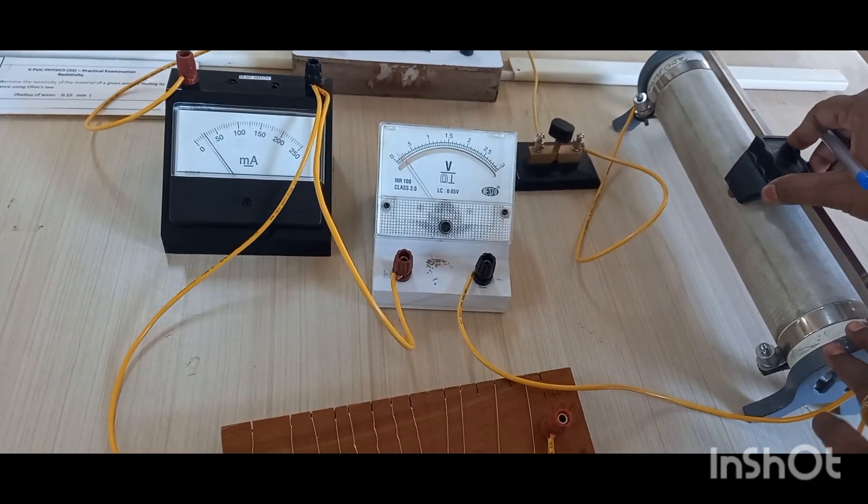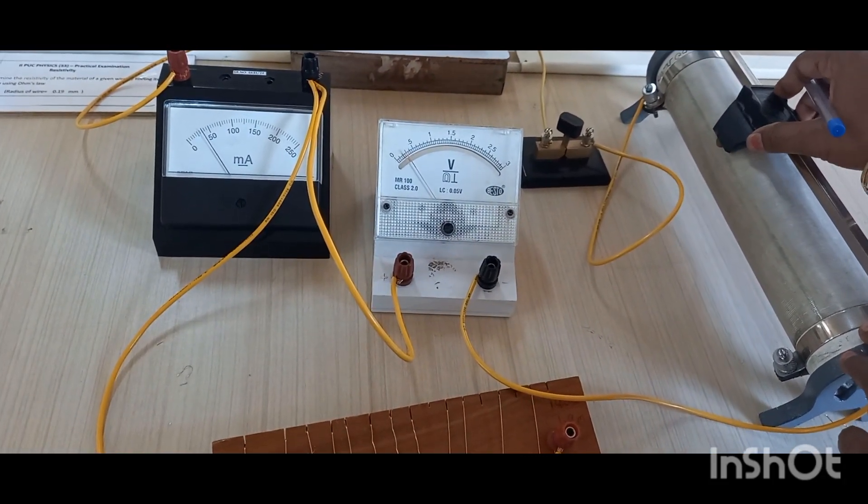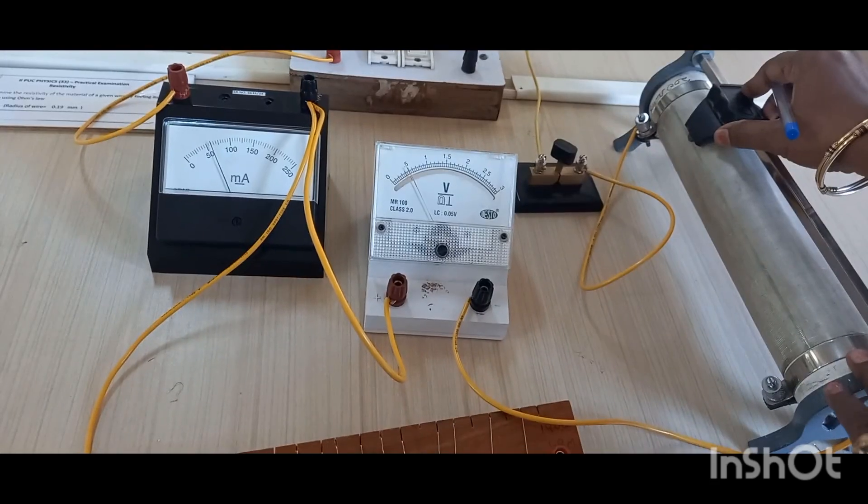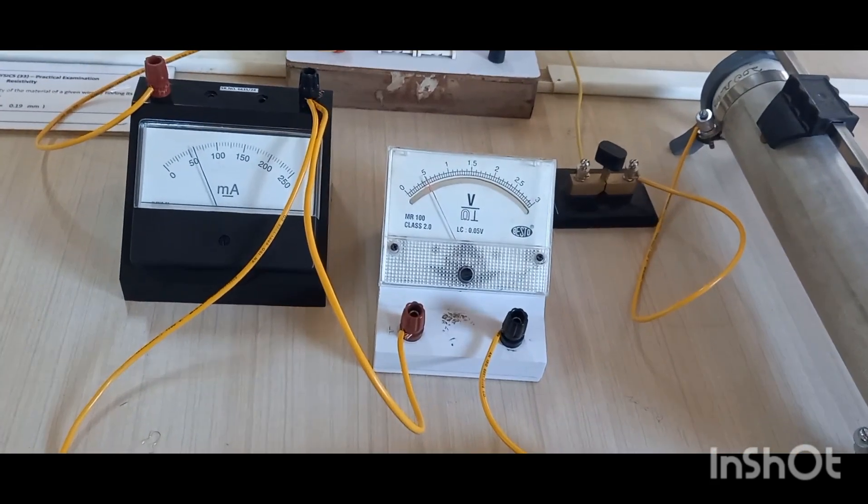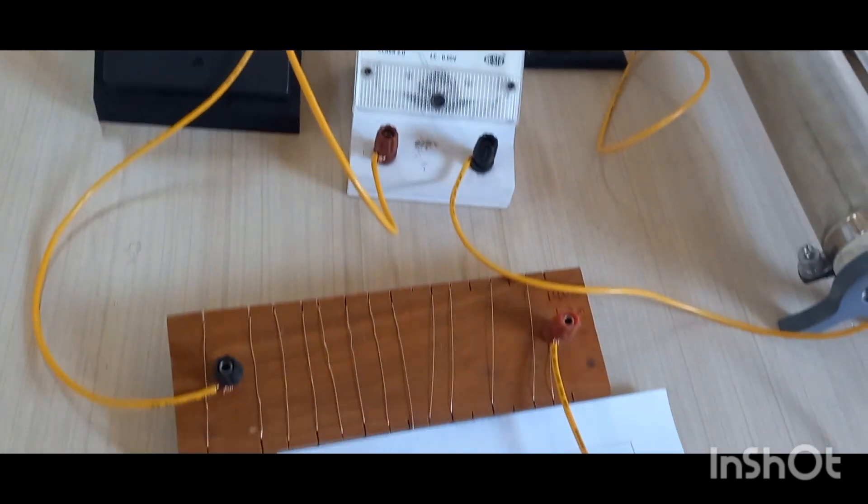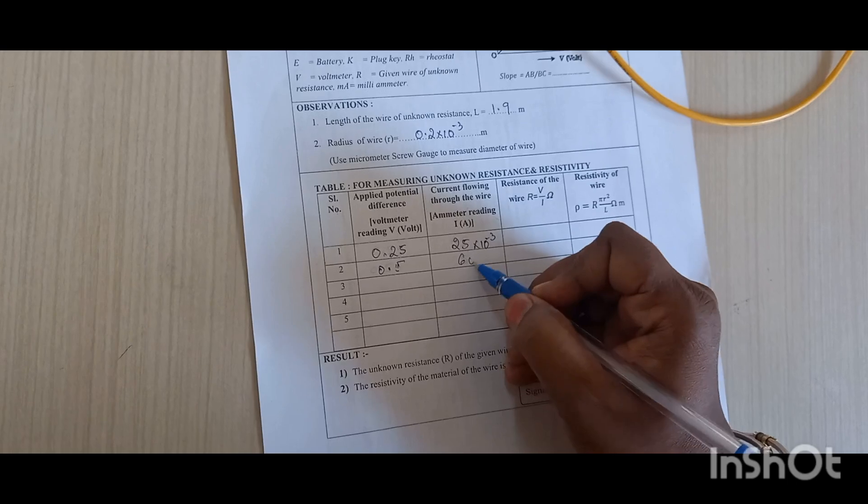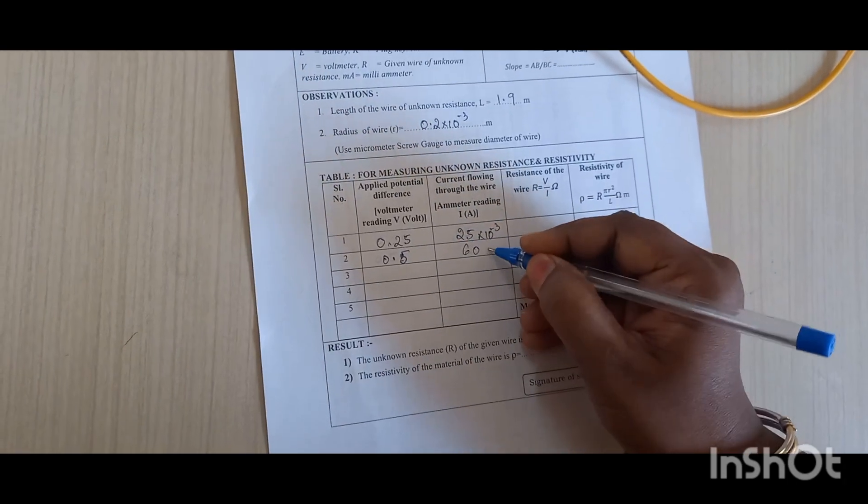So again I will vary the reading. I will take at 0.5. At 0.5 the reading will be 60 milliampere. So for 0.5 it is 60 milliampere.